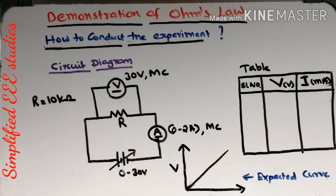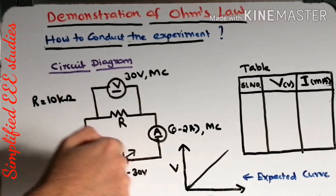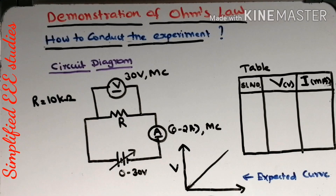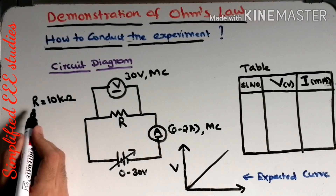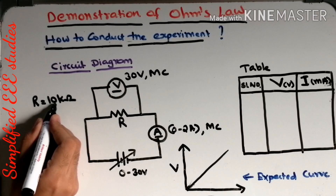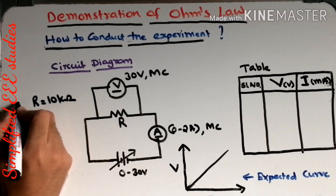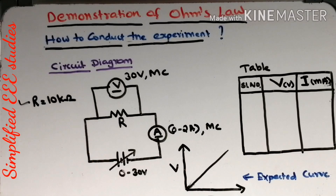Now I will be explaining the procedure. First, do the connections as per the given circuit diagram. You have to replicate the circuit in the virtual lab in the same manner. Fix the value of resistance — that's the second procedure. Either 5 kilohm, 10 kilohm, or 15 kilohm. I will be taking R equal to 10 kilohm.